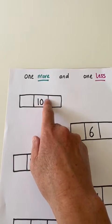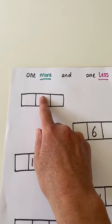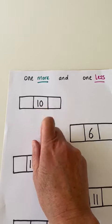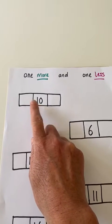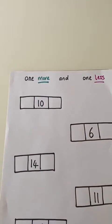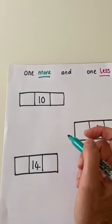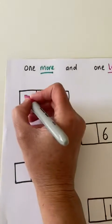So if you imagine I have 10 pens and I take one away, what number comes before 10? You take one away. It's nine.